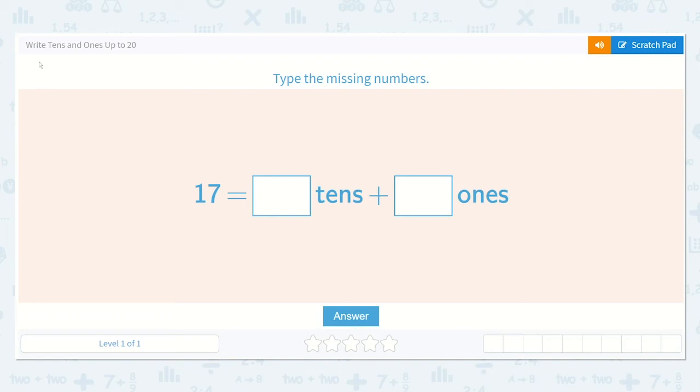All right friends, let's work on the lesson, write tens and ones up to 20. So they say, type the missing numbers. They give us the number 17 and they want us to decompose it or break it apart into tens and ones.